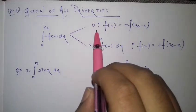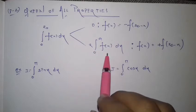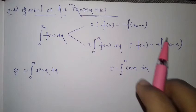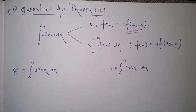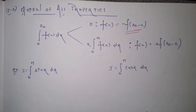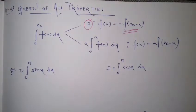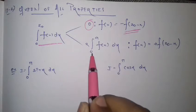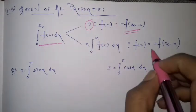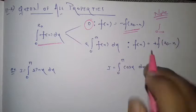This property states: the integral from 0 to 2a of f(x) dx equals 0 if f(x) = -f(2a - x). It equals twice the integral from 0 to a of f(x) dx if f(x) = f(2a - x). So when you replace x with the sum-of-limits minus x: if the function goes negative, the answer is 0; if it stays unchanged, you can write it as 2 times the integral from 0 to a. The lower limit must be 0 — this is compulsory.